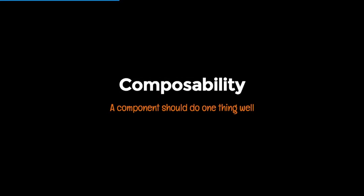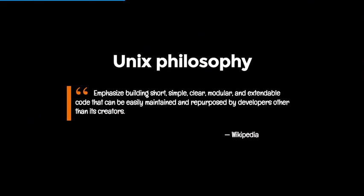So back to composability. If we think about how we can use all these APIs in web components, we should think about a component doing one thing well — small and concise. This really ties back to the Unix philosophy, which emphasises building short, simple, clear, modular, and extendable code that can be easily maintained and repurposed by developers other than its creators.